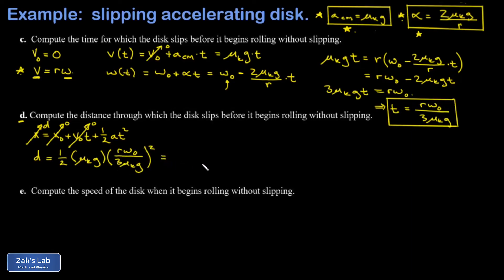So if I handle the constants first after squaring this second piece, that's going to give me a 9 in the denominator. I can collect that with the 1/2 out in front and get an 18 in the denominator. And when I square the μₖg in the second piece, one of those is going to cancel with the one that's out in front. But it leaves me with a μₖg in the denominator. And then in my numerator, I have r²ω₀². And that's a fine way to leave the answer.